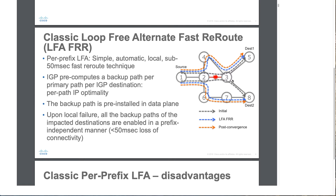When we introduce the concept of loop-free alternate, what are we trying to do? In case anything happens to our primary path, for example the first path to destination 1 via node 1, 2, 3, and 5 — if anything happens to this path, what is our alternate in this topology? And not just any alternate — we want to stress the word loop-free, meaning we want another path that does not go through a node that could potentially create a loop. We want to create a different alternate path which is loop-free, and we are doing this very quickly, in less than 50 milliseconds.